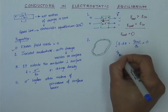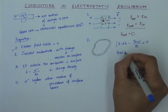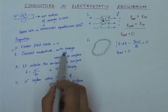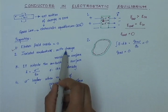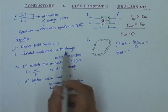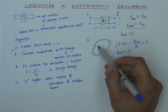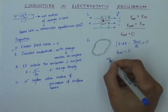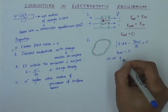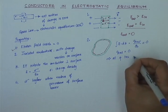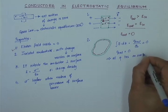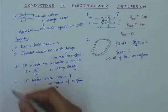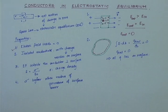This tells us that the charge enclosed inside the conductor is zero. However, we said that the conductor had some net charge on it. So if the charge enclosed inside the conductor is zero, that obviously implies that all the charge Q lies on the surface of the conductor only — which proves property 2.